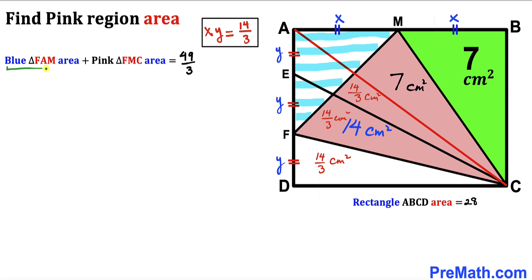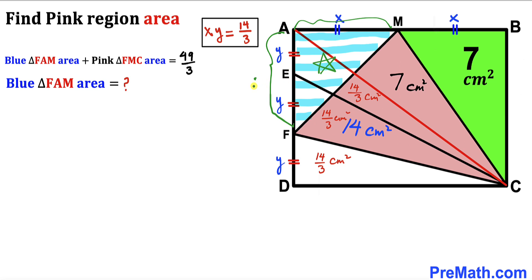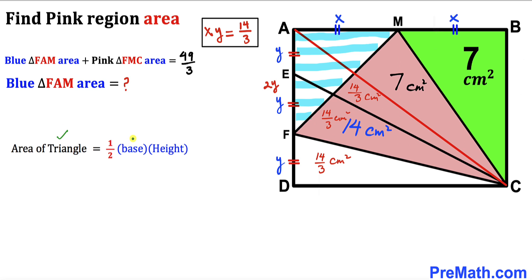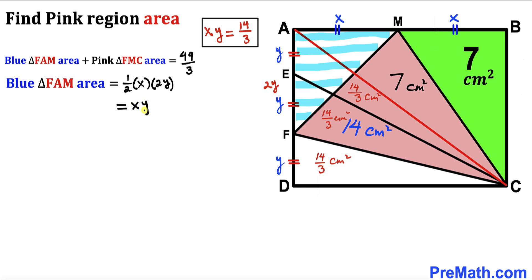Now we calculate the area of blue triangle FAM. Its base is X and its height is Y + Y = 2Y. So area of FAM = ½ × X × 2Y = X × Y = XY. Since XY = 14/3, the area of triangle FAM is 14/3 cm².